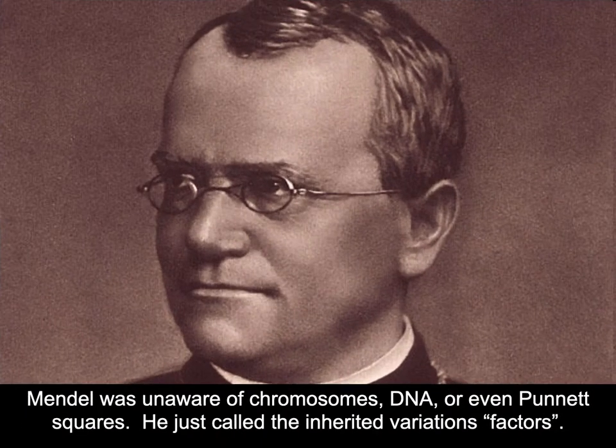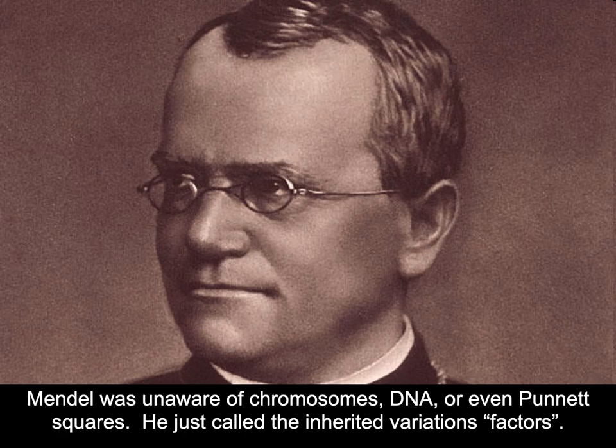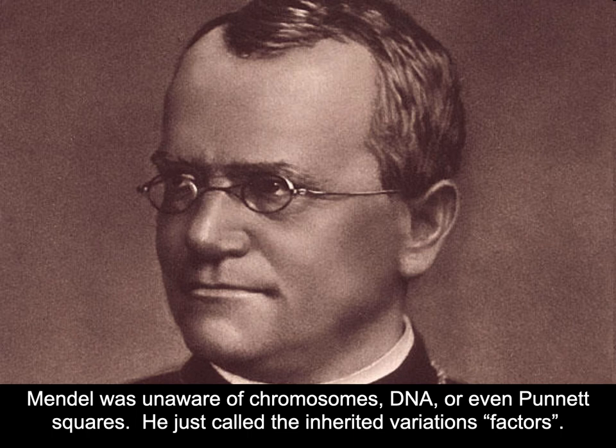Remember, Mendel came up with this whole knowledge of basically what was going on with genetics before we understood anything about genetics. He was completely unaware of chromosomes, DNA, or even Punnett squares. These simple things that you guys are doing in class — Punnett squares — were not something that Mendel had. He was just using pure math to figure all this stuff out. Now all these different variations, like yellow flowers versus white flowers that he was studying, he referred to those variations as factors. And today we recognize them as something a little bit more in depth.